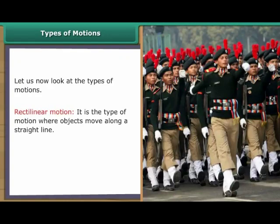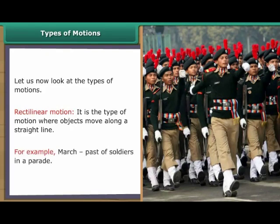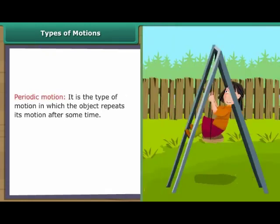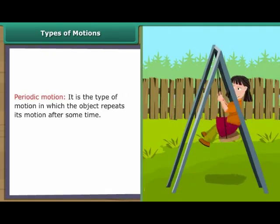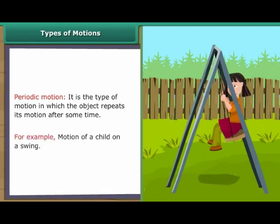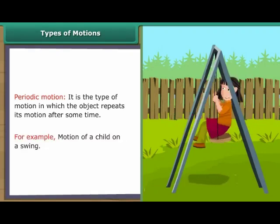Rectilinear Motion. It is the type of motion in which objects move along a straight line. For example, it is the motion of an object that keeps a constant distance from a point. For example, hands of a clock. Periodic Motion. It is the type of motion in which the object repeats its motion after some time. For example, motion of a child on a swing.